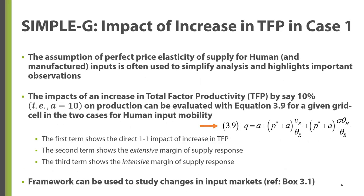Equation 3.9 shows the impact of an increase in total factor productivity on total production in a given grid cell when labor is perfectly mobile. Each term in this equation, except P and A — which are aggregate-level price and productivity change — are indexed by the grid cell, but with the G-index omitted.